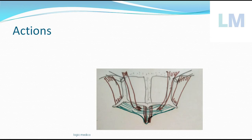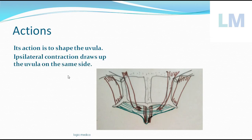The action of Musculus Uvulae is mainly to alter the shape of the uvula. Ipsilateral contraction of one of these muscles draws the uvula toward the same side — if the right side contracts, it shifts to the right; if the left side contracts, it shifts to the left.